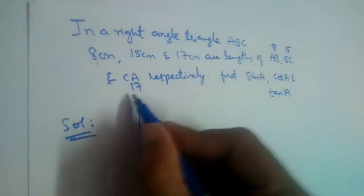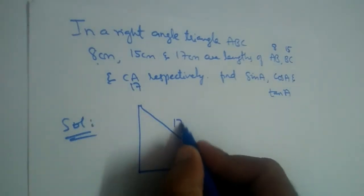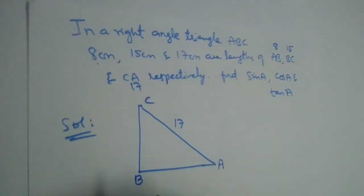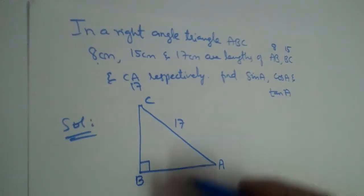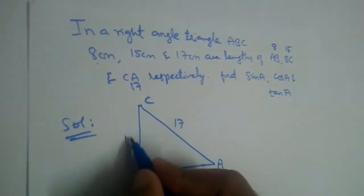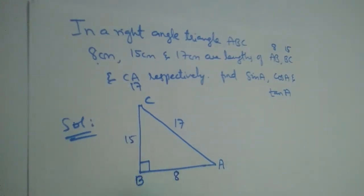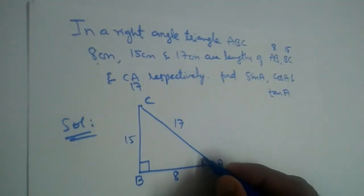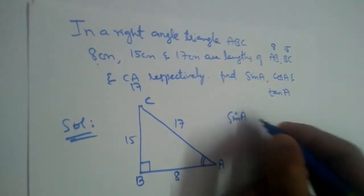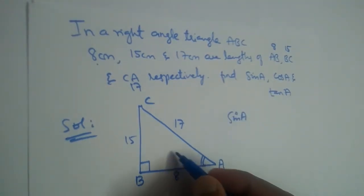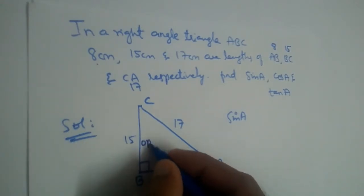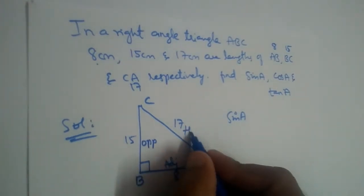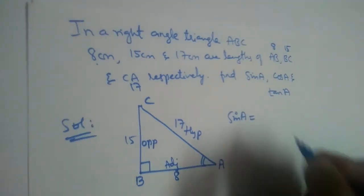The longest side is 17, so it should be the hypotenuse — AC is the hypotenuse, and the right angle is at B, so that is 90 degrees at B. BC is given as 15 and AB is 8. We need to find sin A. To angle A, the opposite side is BC, the adjacent side is AB, and the hypotenuse is AC.